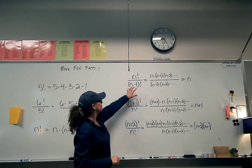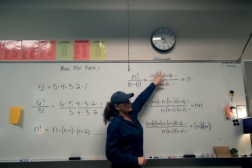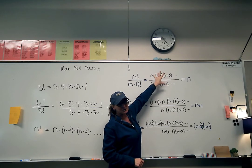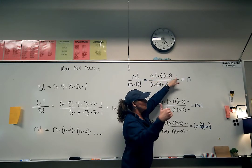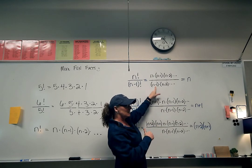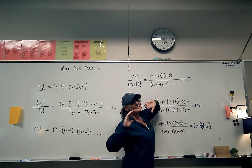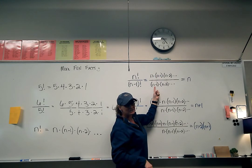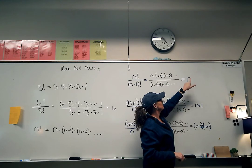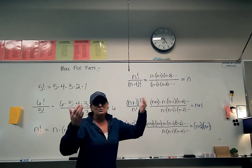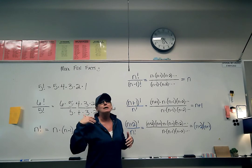Here's what I want you to write. If we have n factorial over n minus one factorial — this is just thinking it through. n factorial is n times n minus one times n minus two and so on. n minus one factorial starts at n minus one and goes down. You can see that all from n minus one down cancels with the entire denominator and you're just left with n. So n factorial over n minus one factorial equals n.